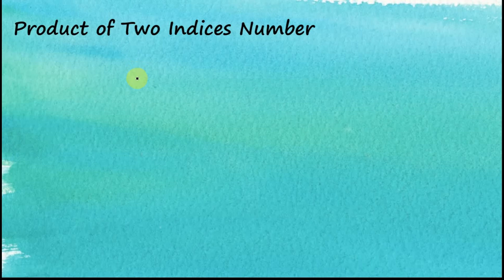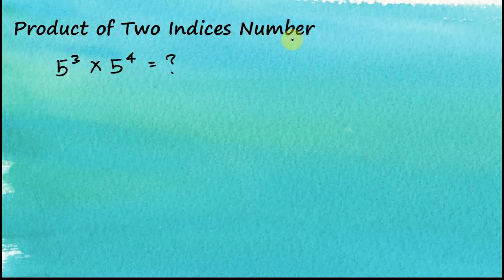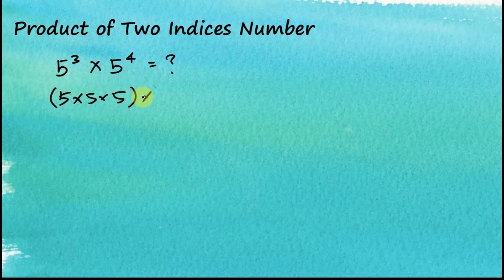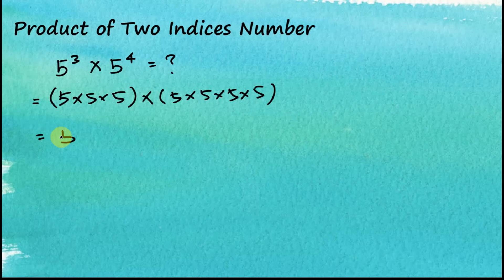Let's look at the product of two index numbers. For example, five to the power of three multiplied by five to the power of four. Five to the power of three is five times five times five, and five to the power of four is five times five times five times five. In total, this equals five to the power of seven.